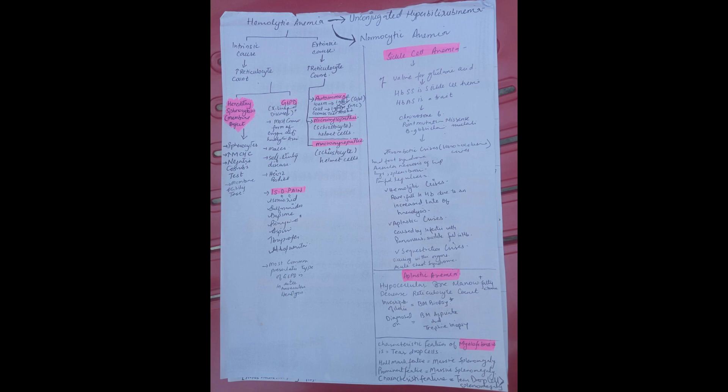I is for isoniazid, S is for sulfonamides, D is for dapsone, P is for primaquine, A is for aspirin, I is for ibuprofen, and N is for nitrofurantoin.